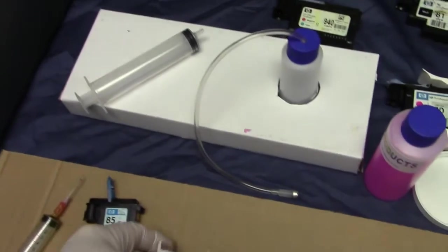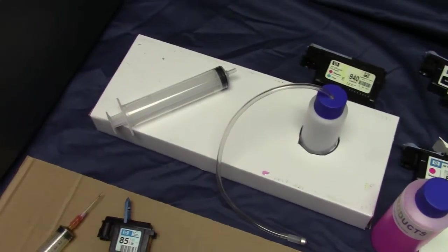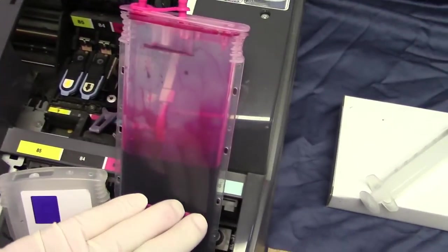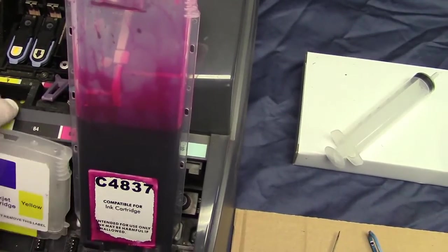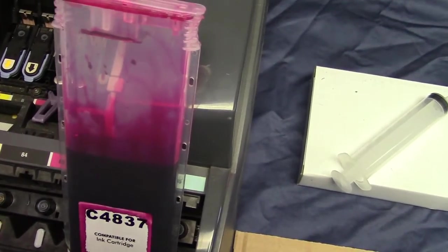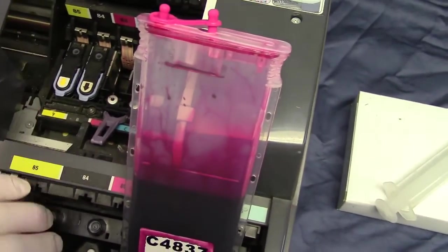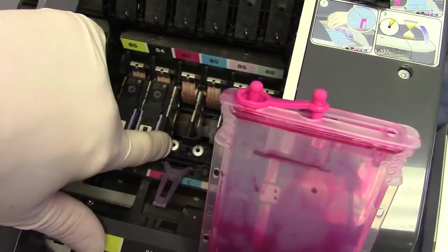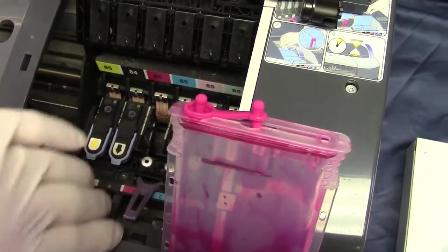I'll show you that in a minute, but that's where you're going to get the ink from—from the cartridge. Now you can leave the cartridge in and draw it up from here if you want to clear any air that's in that line.